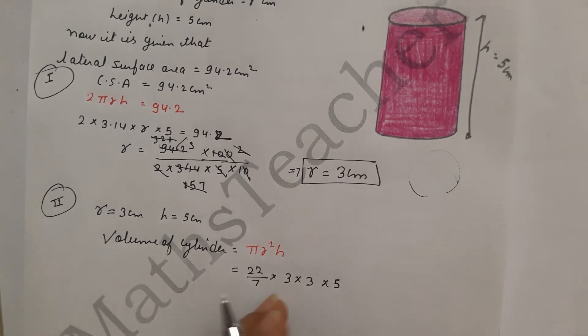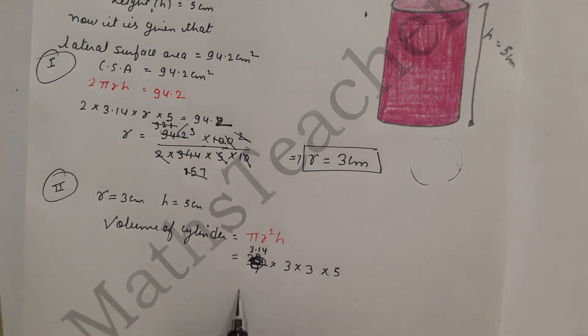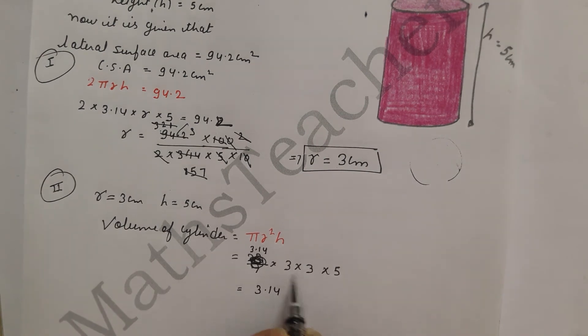5. So here, sorry, π value you have to give 3.14. So this is 3.14, 3 × 3 = 9, × 5 = 45. So multiply.